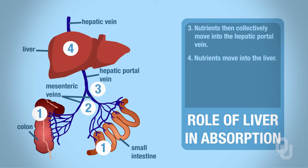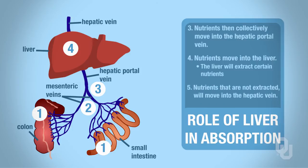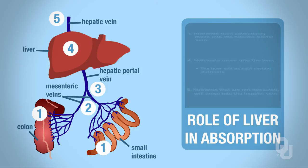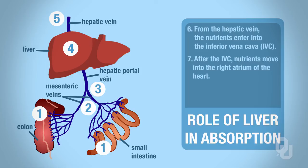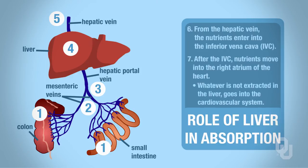What the liver is going to do is extract certain nutrients and start processing those nutrients. If a nutrient does not get extracted, it enters into the hepatic vein, labeled number 5, and then goes off into the inferior vena cava. From there, it will enter into the right atrium of the heart, so those nutrients get to pass through the cardiovascular system and can be distributed out to the body as needed. Whatever does not get extracted from the liver goes into the cardiovascular system.